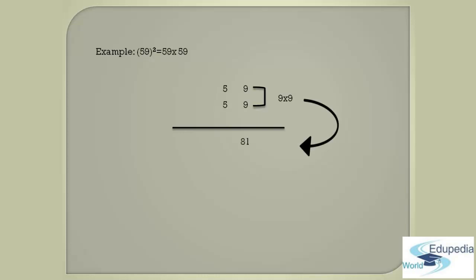After that, step number two says that you have to multiply the digits that are in the tens place. No doubt that you have to multiply the 5s. If you multiply two 5s, you will get 25. And you have to add the digit that is in the ones place, that is 9. So, 25 plus 9, you will get 34. You have to take that 34 below the horizontal bar and write it on the left side.